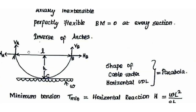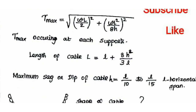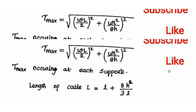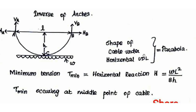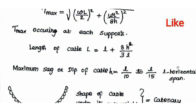H is equal to L/10 to L/15, where L is the horizontal span. The shape of a cable under horizontal UDL is a parabola. The shape of a cable under its own weight is a catenary. These are repeated MCQ topics — the shape of a cable under horizontal UDL versus under its own weight.